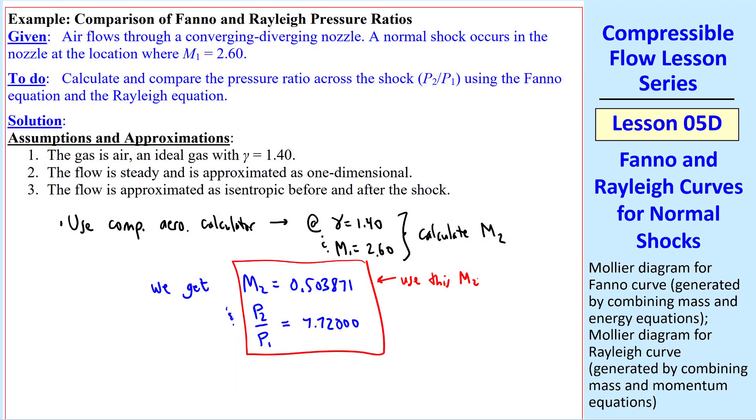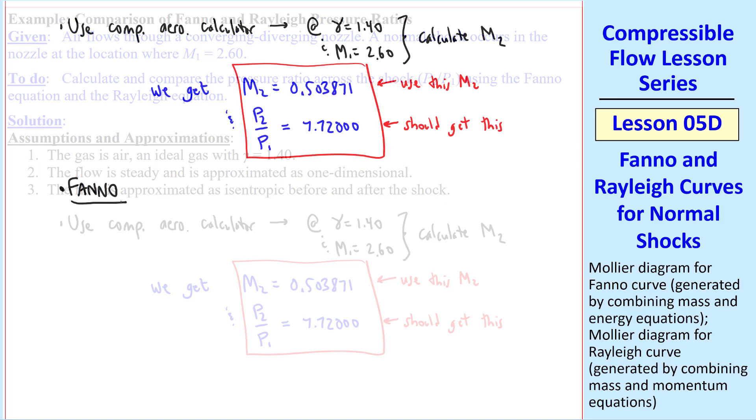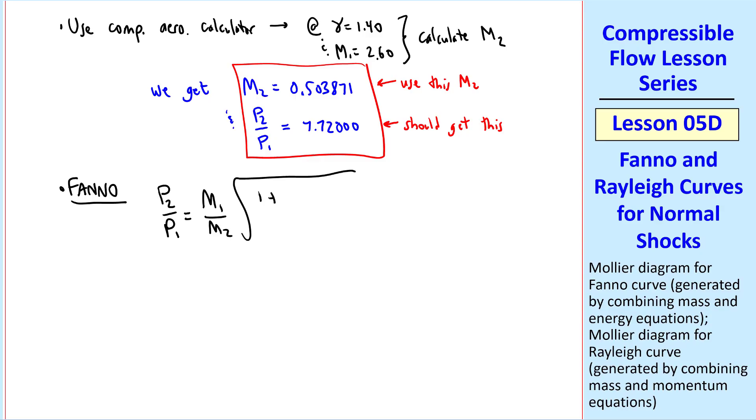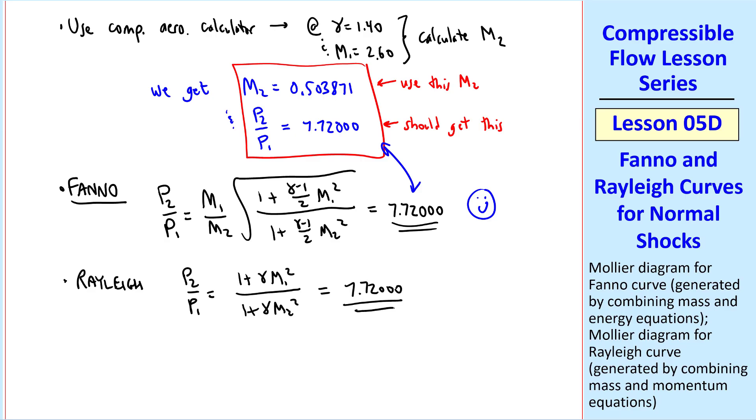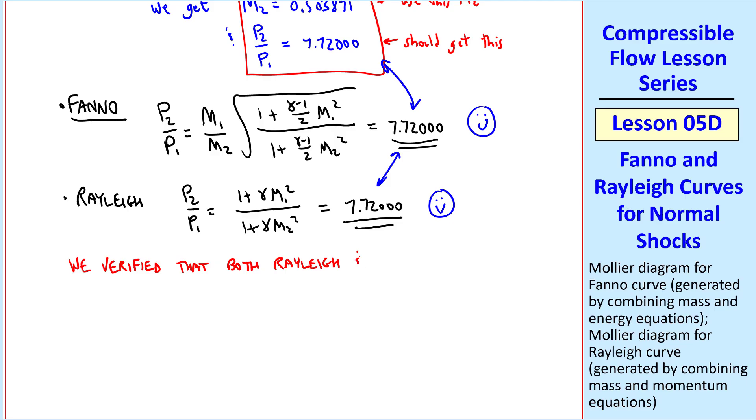Let's use this M2 in our Fanno and Rayleigh equations, and if everything is okay, we should get this pressure ratio. First, for Fanno, I write out the pressure ratio equation, and when we plug in gamma M1 and M2 from here, we get 7.7200, which agrees with the Compressible Aerodynamics Calculator. Let's repeat this for Rayleigh. P2 over P1 is 1 plus gamma M1 squared over 1 plus gamma M2 squared. And again, when you plug in the values for gamma M1 and M2, we get 7.7200, which again agrees. So we verified that both Rayleigh and Fanno equations are satisfied across a normal shock.